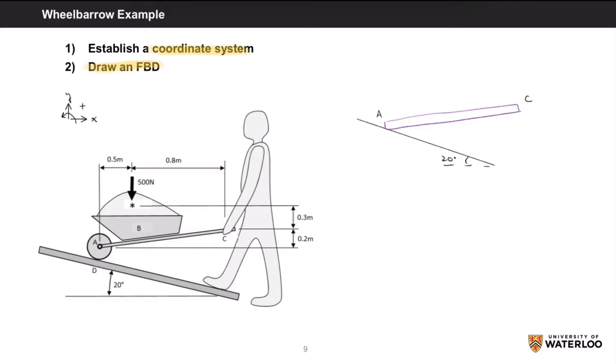For the FBD of the wheelbarrow, I'll simplify it into a beam and draw in all the forces and reactions. We keep the downward 500N force and add reactions at points A and C as there are contact forces at these points. The contact force at A is a roller support, so it will be free to move in the direction parallel to the ramp, but it will have a reaction acting perpendicularly to the ramp, and I'll call this AN.